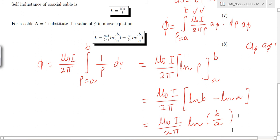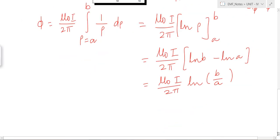Now we know the value of phi. But what would be the value of n for a coaxial cable? n for a coaxial cable is 1 because the coaxial cable does not contain any turns in it. The value of n for a coaxial cable is equal to 1.